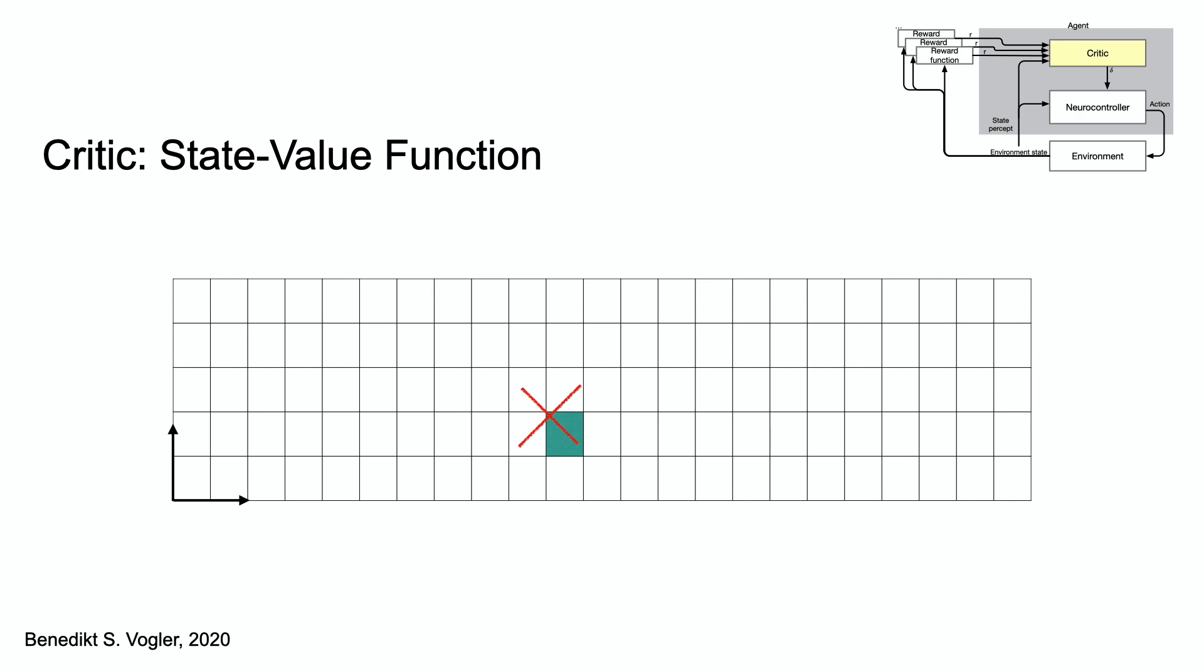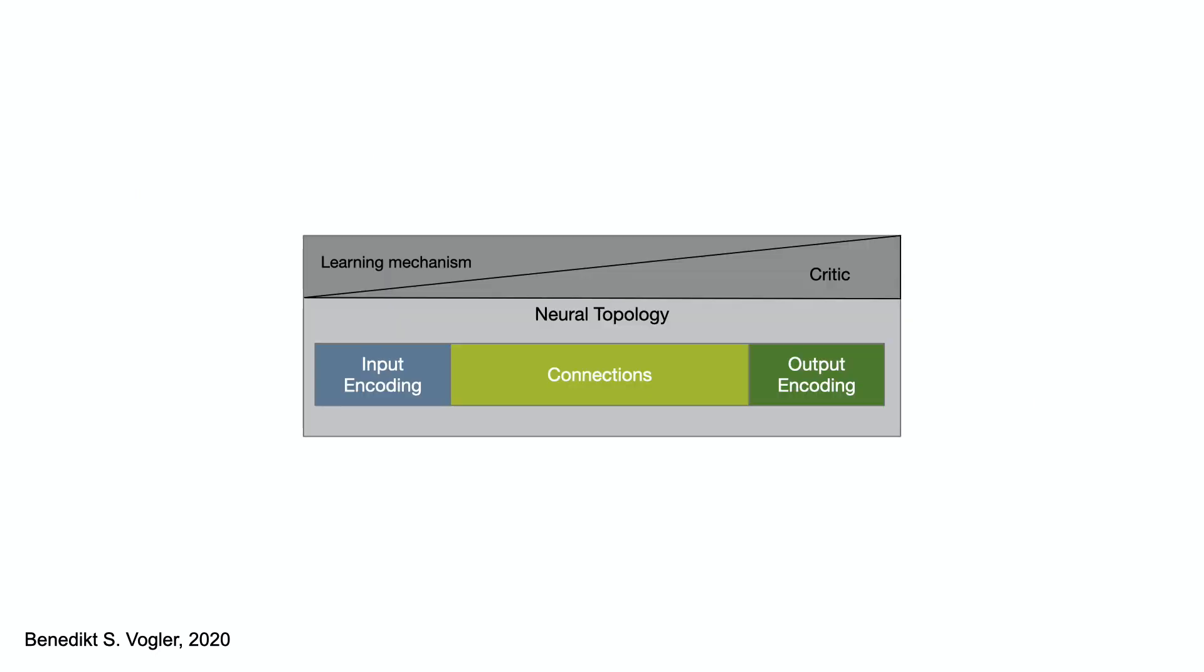although the neurocontroller hasn't fully learned the actions it should perform. The design of the critic and the learning mechanism goes hand in hand. They are applied on a neural network, which consists of three areas of input encoding,